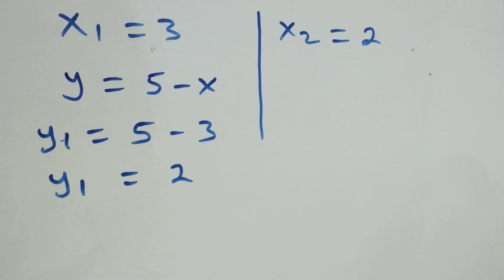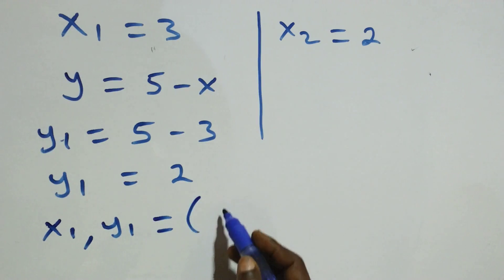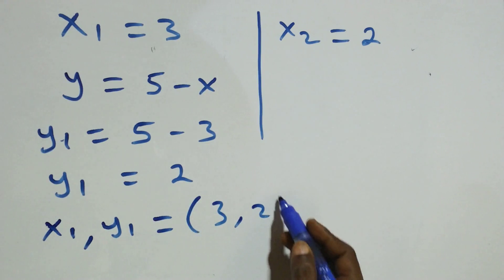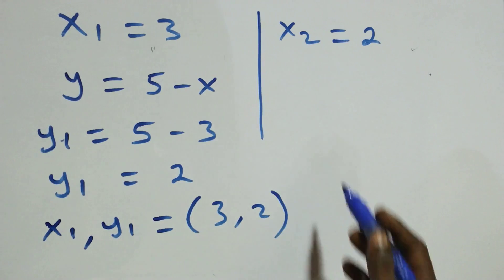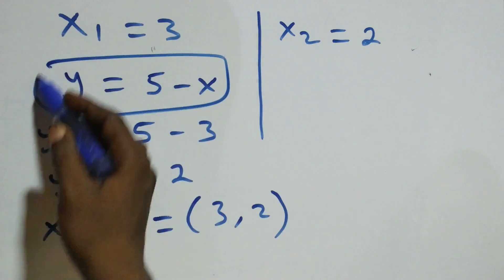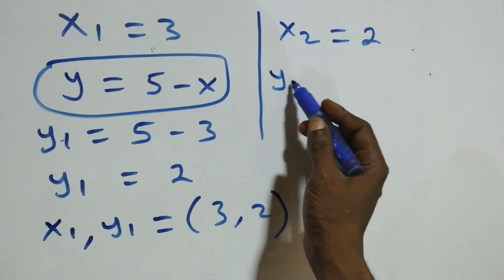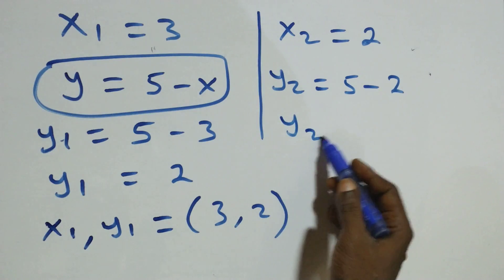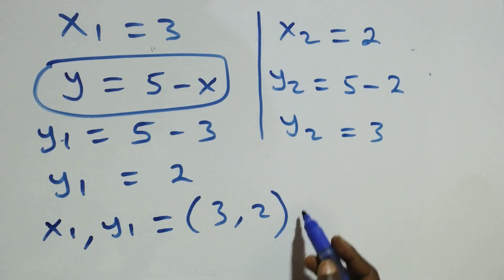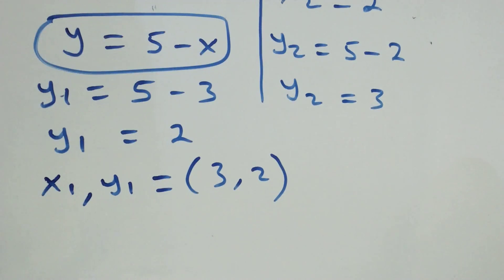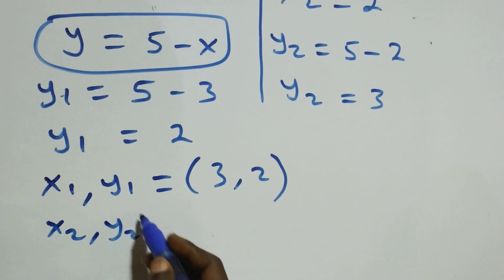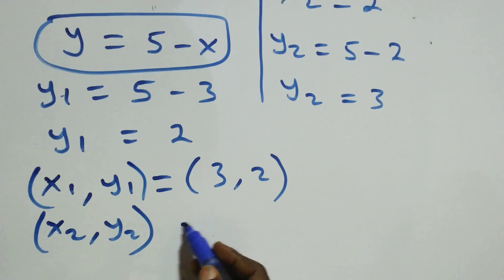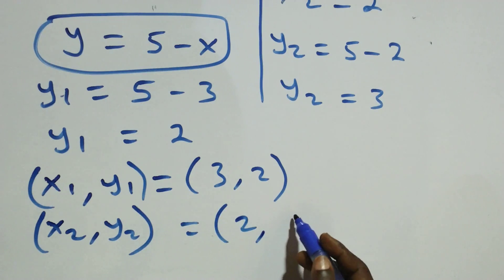The first set of solutions is (x₁, y₁) = (3, 2). For the second solution, y₂ equals five minus x₂, which is five minus two, so y₂ equals three. The second set of solutions is (x₂, y₂) = (2, 3).